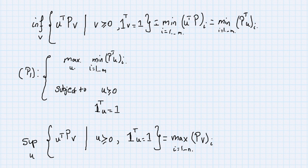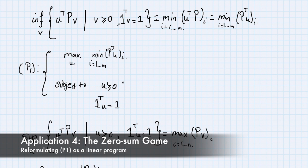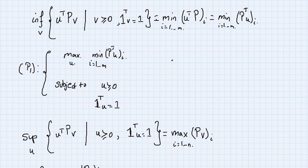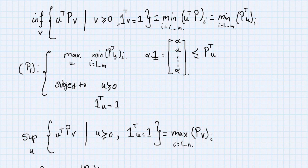That's a really nice way of understanding Lagrangian duality. Let's focus on P1 and reformulate it. Instead of maximizing the minimum of the entries of P^T u, we introduce a scalar alpha such that P^T u is greater than alpha times the ones vector entry-wise. So we maximize alpha, which is much more friendly and easier to deal with than the original form.